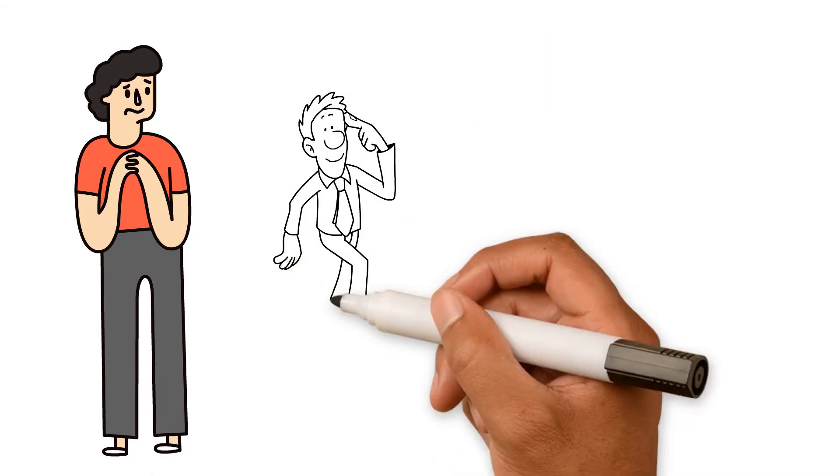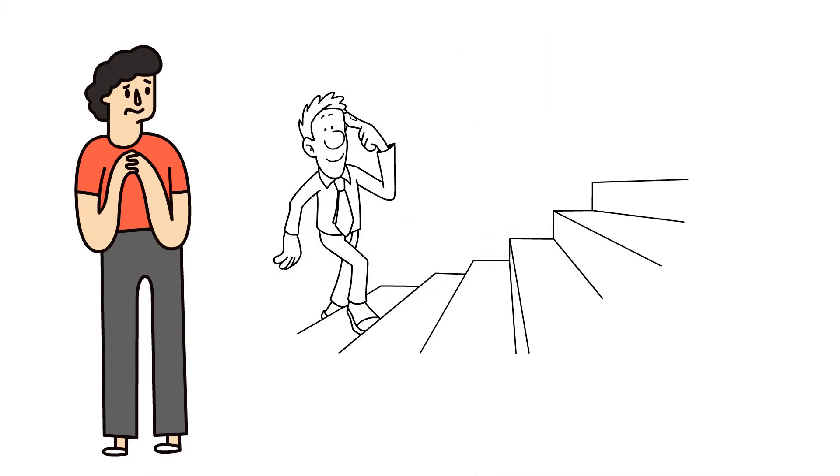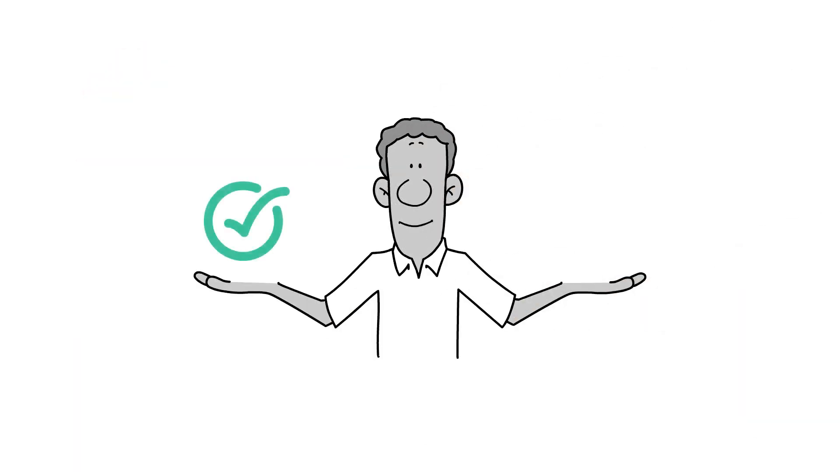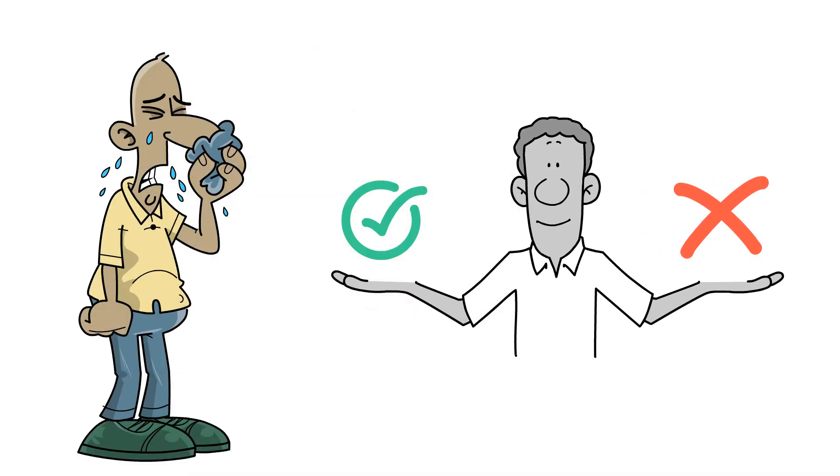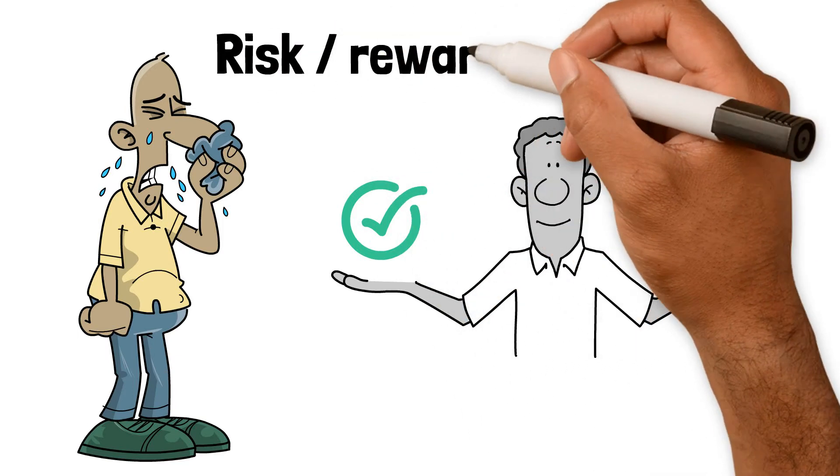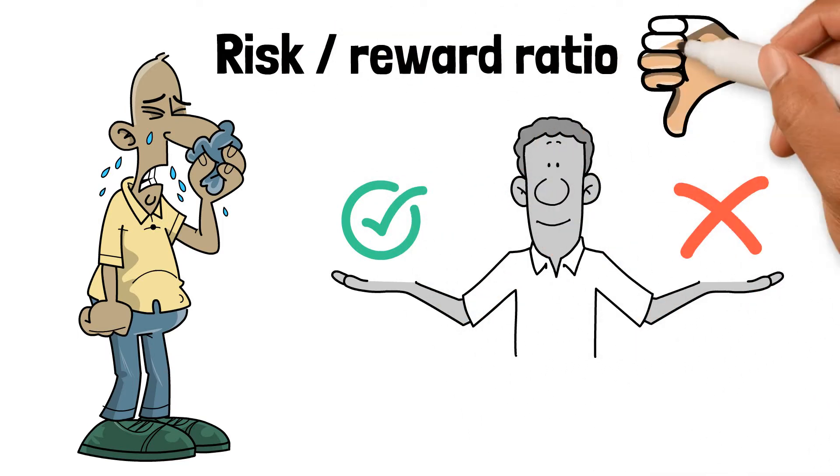Amy Morin suggests that mentally strong people counteract this aversion by taking calculated risks. They weigh up the pros and cons in any given situation, and work out what the worst thing that could happen could be, before taking on anything risky. If the risk-to-reward ratio is not in favor of the reward, then it's probably not worth pursuing in the first place.